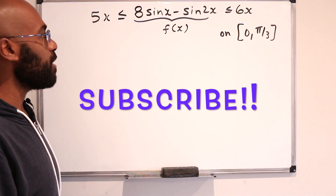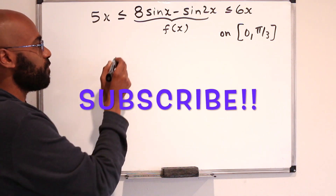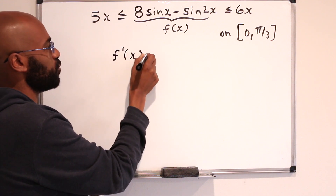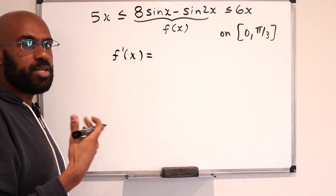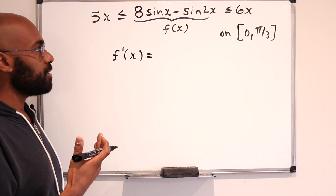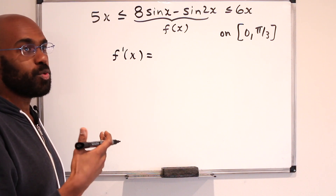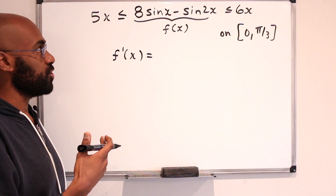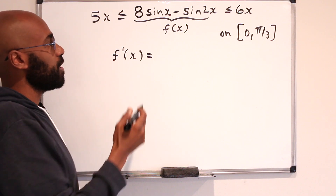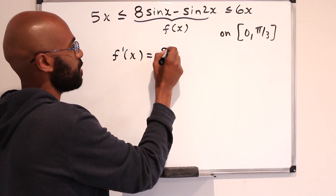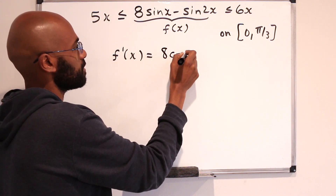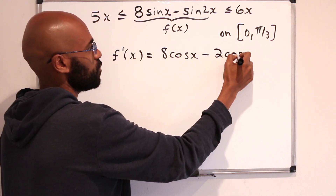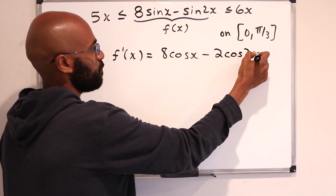Let's go ahead and dive into this problem. The first thing I want to consider is the first derivative of this function. The first derivative tells you something about the increasing and decreasing nature of the function. If we differentiate, we get 8cos(x) minus 2cos(2x) by the chain rule.